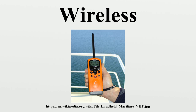Somewhat less common methods of achieving wireless communications include the use of other electromagnetic wireless technologies, such as light, magnetic, or electric fields, or the use of sound. It should be noted that the term wireless has been used twice in communications history, with slightly different meanings. It was initially used from about 1890 for the first primitive radio transmitting and receiving technology, as in wireless telegraphy, until the new word radio replaced it around 1920. The term was revived in the 1980s and 1990s mainly to distinguish digital devices that communicate without wires from those that require wires. This is its main usage today.